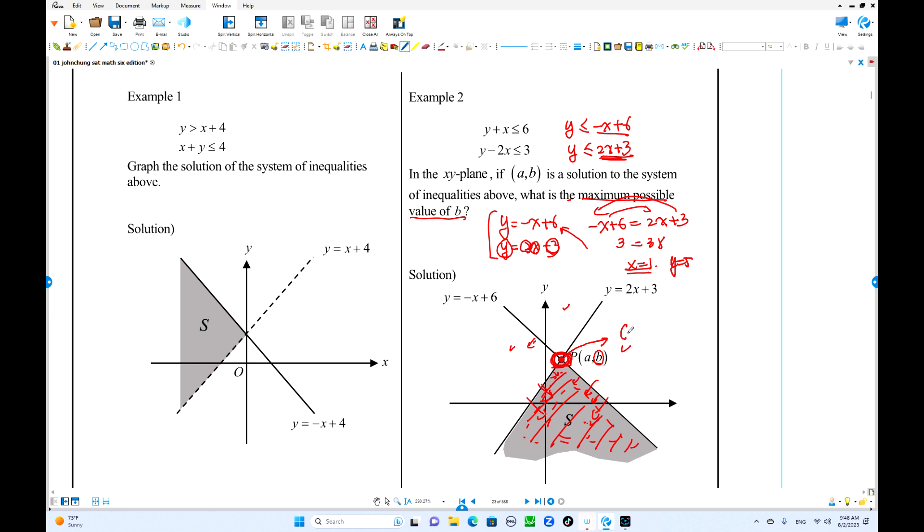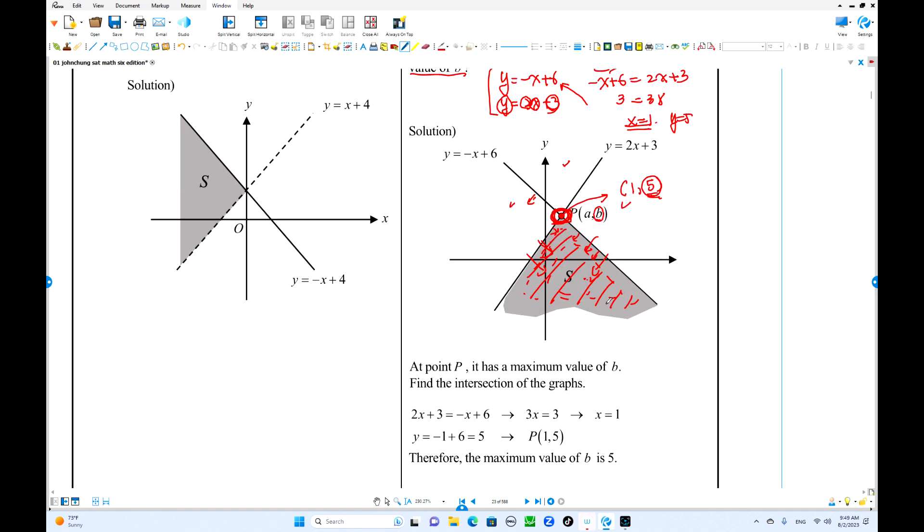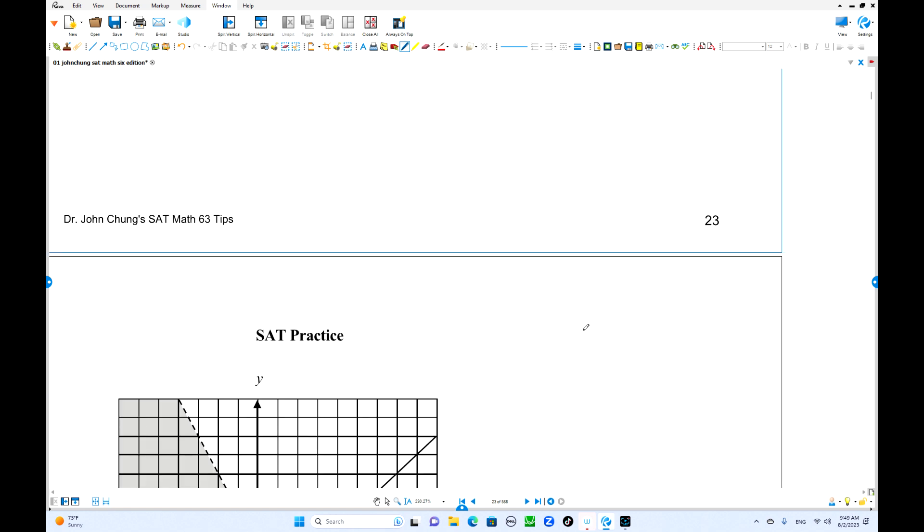So at this point, when x equals 1, y equals to 5. What is the maximum possible value of B? This is the maximum possible value of B. So B is 5 is the answer. We're going to have some practice here.